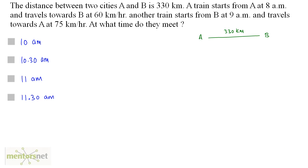The distance between these two cities is 330 kilometers. Let us say that the two trains meet at a point. Assume that the time taken for the train starting from A to reach the meeting point is x hours. The train starting from B starts 1 hour late, since train A starts at 8 am and train B starts at 9 am. So the time taken by train B to reach the meeting point is x minus 1 hours.